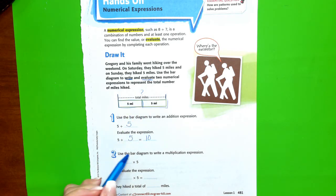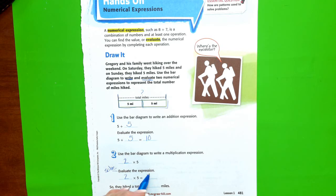We have two 5's. So, 2 times 5, this is the expression. Now, we're going to evaluate it. We're going to solve the expression. 2 times 5 is 10.